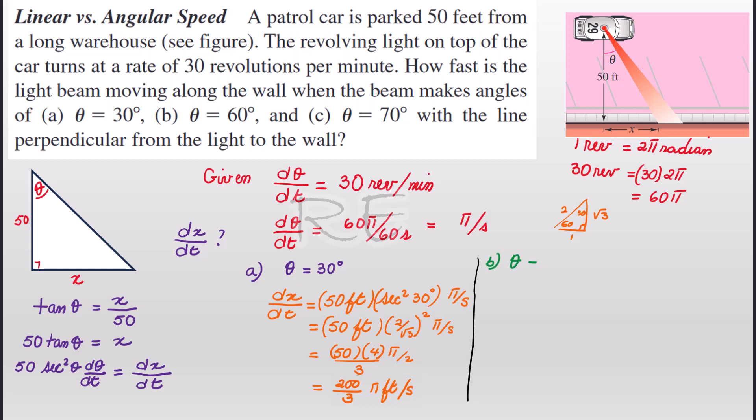When θ is equal to 60. When θ is equal to 60, we'll just use our template again. dx/dt will be equal to 50 feet times sec² 60 degrees times π radians per second.